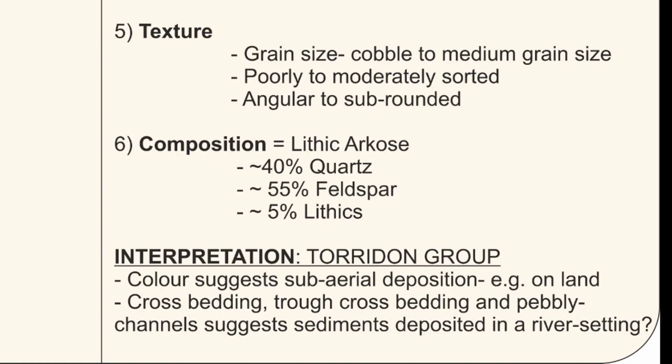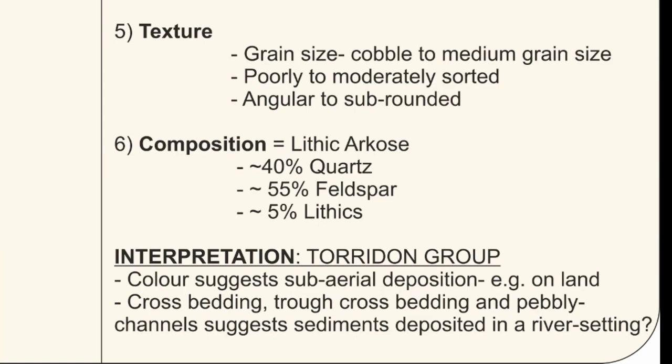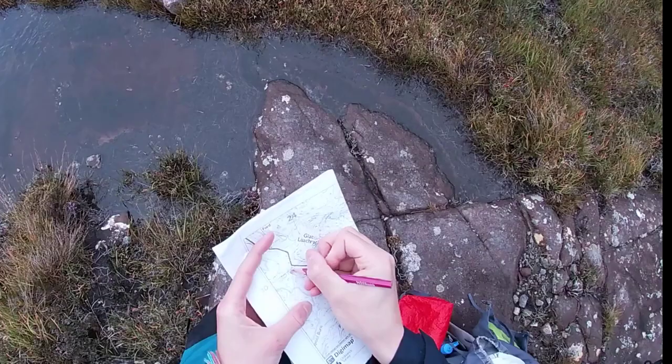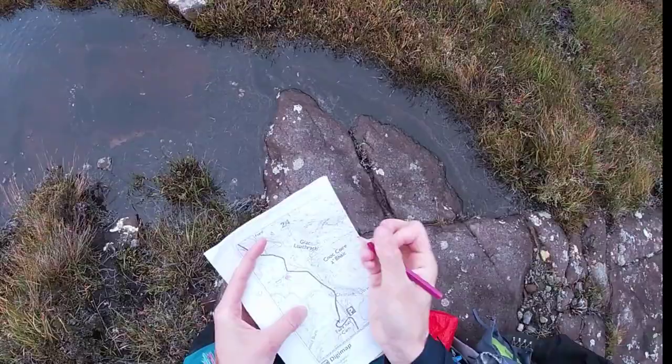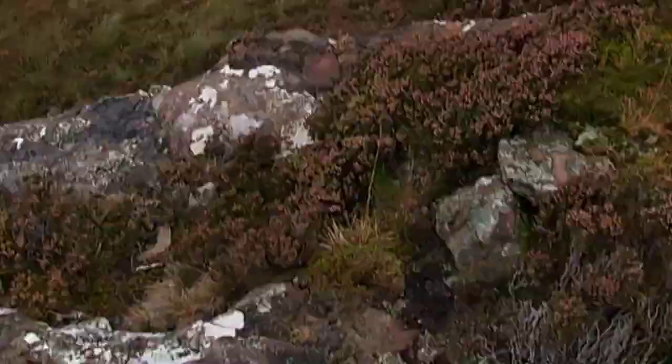Finally, I can now interpret my rock type. I'm pretty sure we are in the Torridonian Group, especially from my previous observations at Clachtoll and along the shores of Loch Assynt. The colour suggests a sub-aerial depositional environment on land. Cross bedding, trough cross bedding, and pebbly channels suggest sediments deposited in a river setting. I'm now happy that I have the Torridonian — I can colour this in on my map and put a coloured square in the margin of my notebook. I'm walking around trying to gauge the shape and size of the outcrop, which I will colour in on my map.